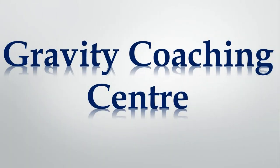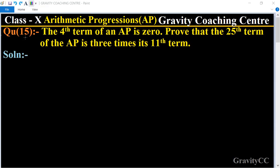Welcome to our channel Gravity Coaching Center, Class 10, Chapter Arithmetic Progressions, Question Number 15. The fourth term of an AP is 0. Prove that the 25th term of the AP is three times its 11th term.